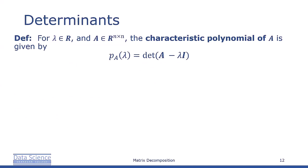The characteristic polynomial of matrix A is defined as p_A(λ) = det(A - λI), where I is the identity matrix. The characteristic polynomial is important in the study of eigenvalues and eigenvectors, which we'll discuss in the next video.